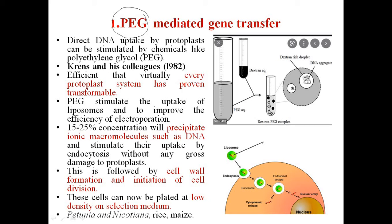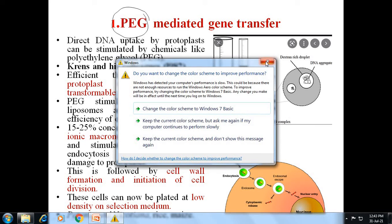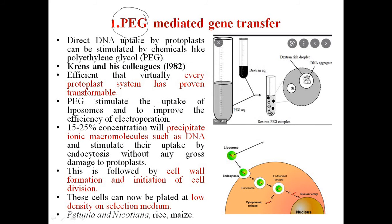In PEG-mediated gene transfer, direct DNA uptake by the protoplast is stimulated using polyethylene glycol. Krens and his colleagues in 1982 first developed this technique. This technique has proven effective for transformation. A concentration of 15 to 25 percent precipitates ionic macromolecules like DNA.